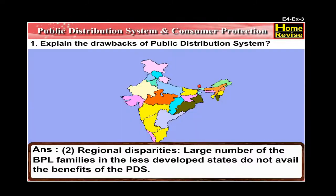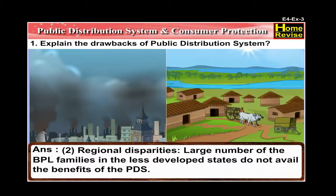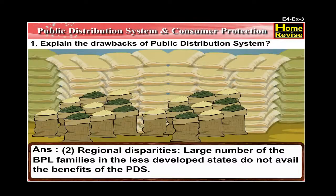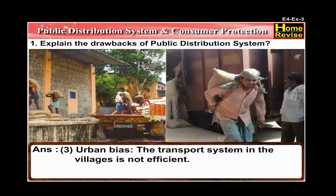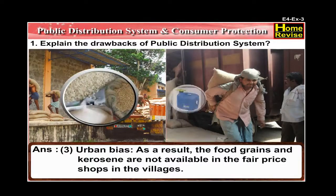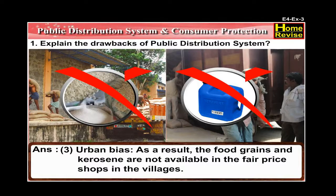Number 2: Regional disparities — a large number of BPL families in less developed states do not avail the benefits of the PDS. Number 3: Urban bias — the transport system in villages is not efficient; as a result, food grains and kerosene are not available in the fair price shops in the villages.